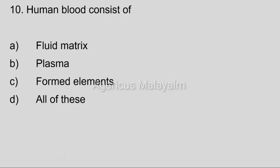Tenth question. Human blood consists of: Option A, Fluid matrix; Option B, Plasma; Option C, Formed elements; Option D, All of these. Correct answer: Option D, All of these.